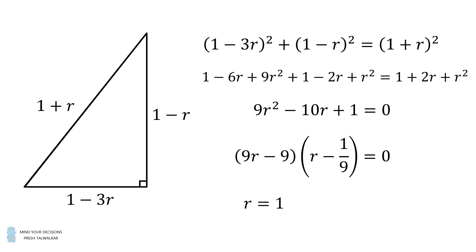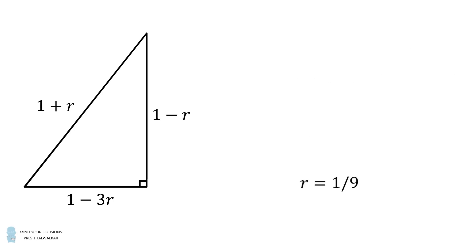This gives the two solutions that r is equal to 1, and r is equal to 1 over 9. But recalling that the radius of the big circle is equal to 1, we can eliminate the solution that r is equal to 1, because we know the radius of each small circle will be less than the radius of the big circle. Therefore, the radius of each small circle is equal to 1 over 9, and that's the answer.